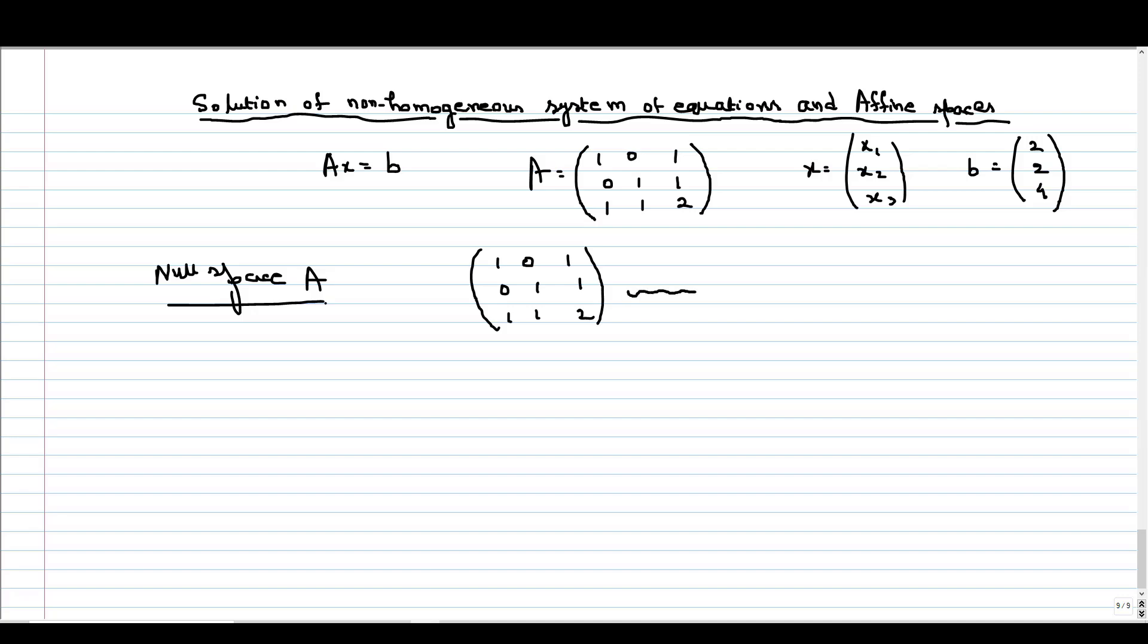If we do R3 minus R1, we will get 1, 0, 1, 0, 1, 1 and 0, 1, 1. Now we will do R3 minus R2. So we will get 1, 0, 1, 0, 1, 1, 0, 0, 0.